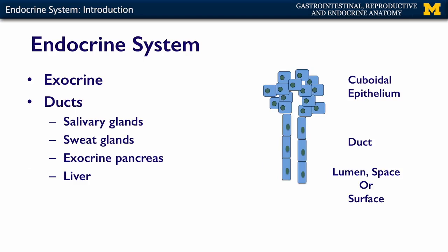Exocrine glands secrete into ducts. You have a cuboidal epithelium modified to create a secretory product. The easiest examples are salivary glands that create saliva and have ducts secreting into your oral cavity, and sweat glands that secrete via a duct onto the surface of your skin to help reduce body temperature. The exocrine pancreas — its digestive enzymes are secreted into ducts that dump into your duodenum. Your liver makes bile and secretes it into the GI system via a system of ducts.